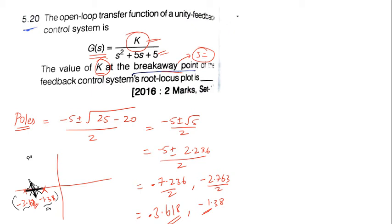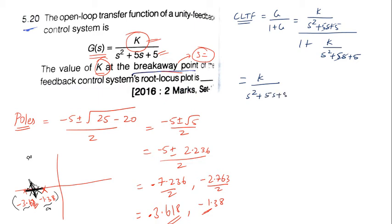So first we need to find the closed loop transfer function. Closed loop transfer function would be g of s divided by 1 plus g of s into h of s. Because it's a unity feedback system, h of s is 1, so I'm just putting g divided by 1 plus g. So this would be k divided by s square plus 5s plus 5 the whole divided by 1 plus k divided by s square plus 5s plus 5. So when we simplify this further, we can take LCM and the denominator will be cancelled, so the numerator becomes s square plus 5s plus 5 plus k. So this is your closed loop transfer function.